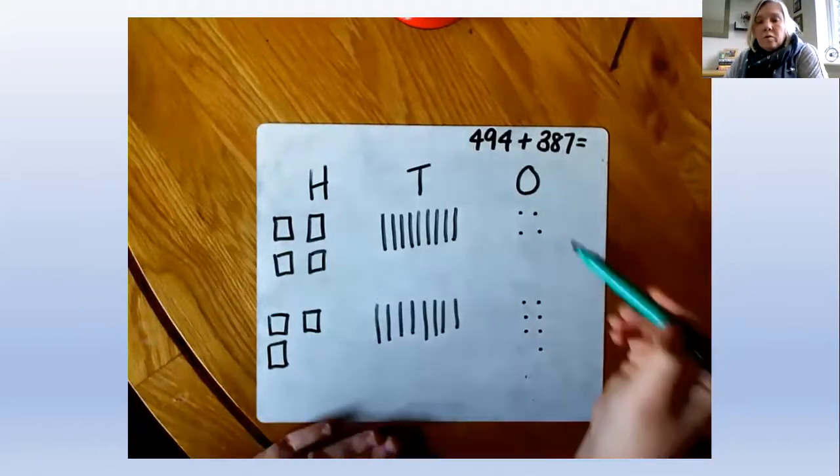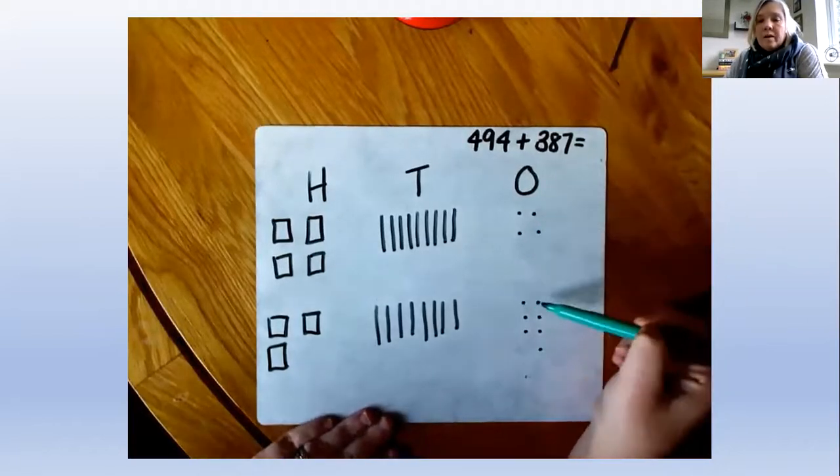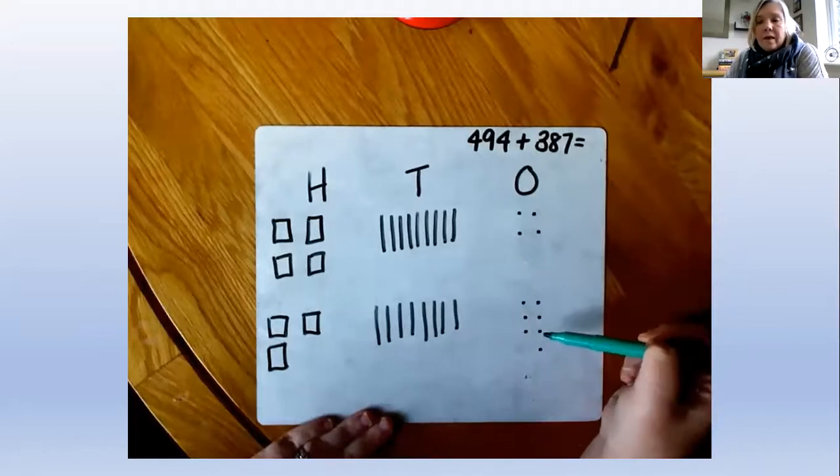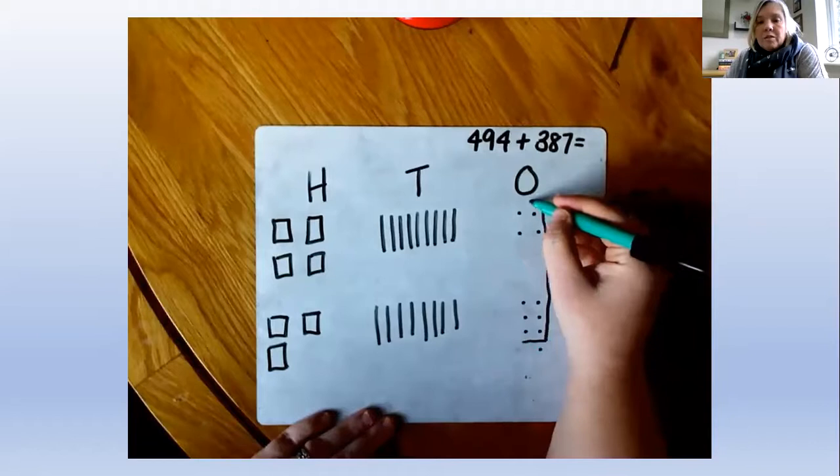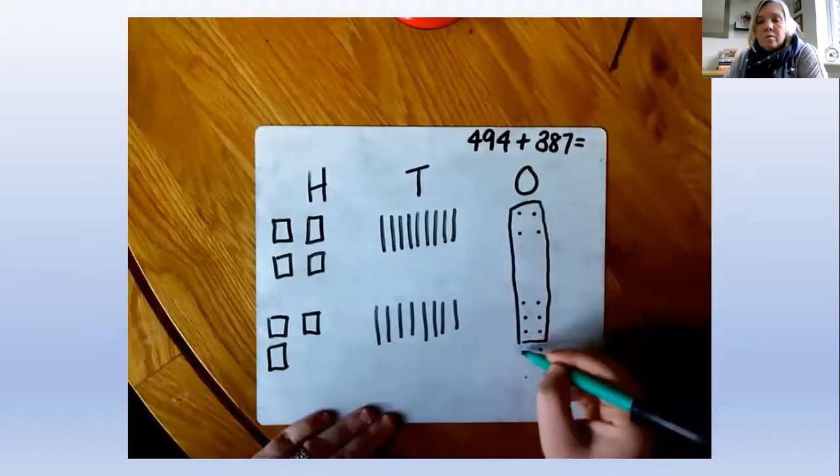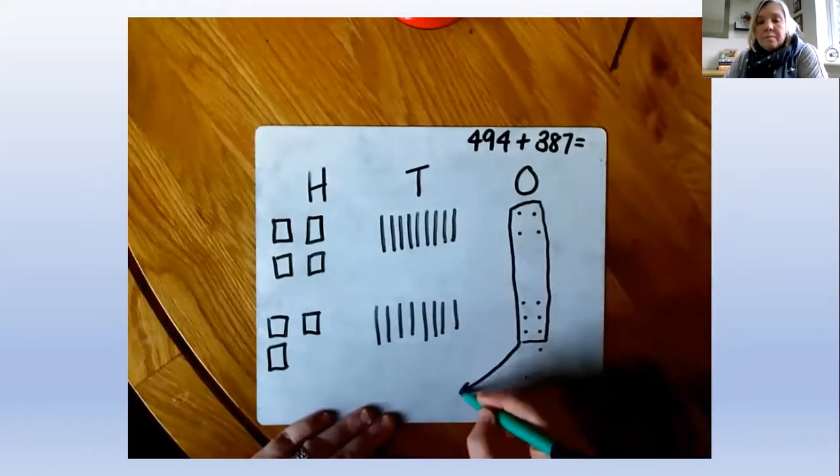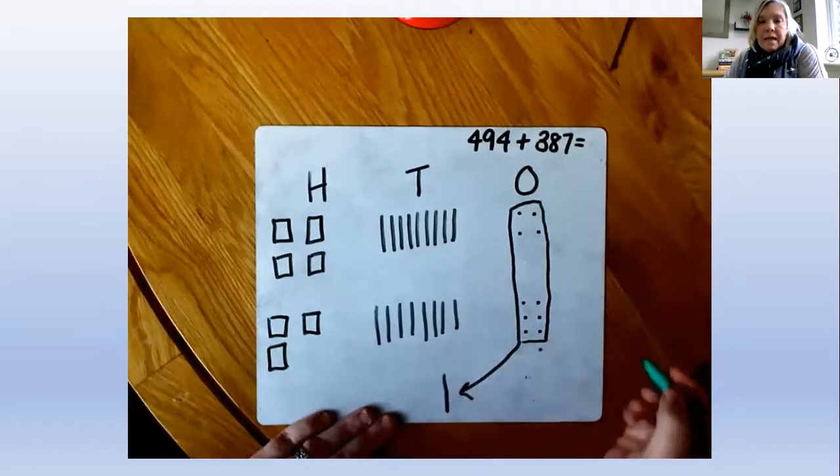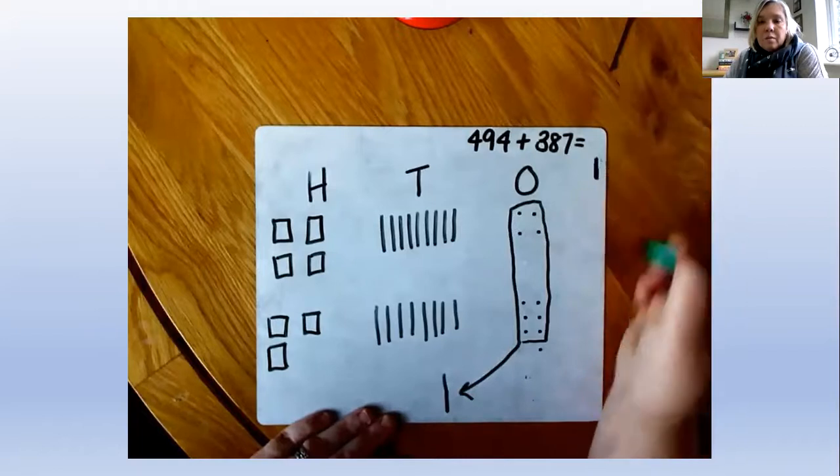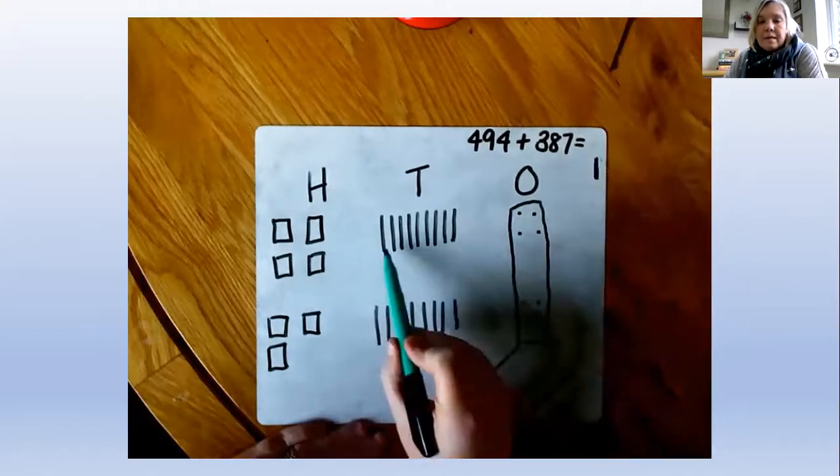So first of all, I'm going to add up my ones column. 4, 5, 6, 7, 8, 9, 10. Stop there. Can't go any further. I need to exchange my 10 ones for 1 ten. And now I need to add my tens. There we go.